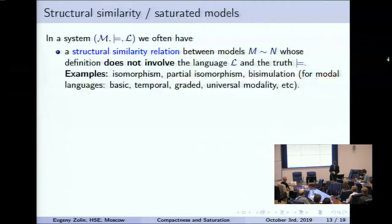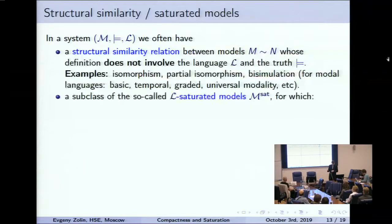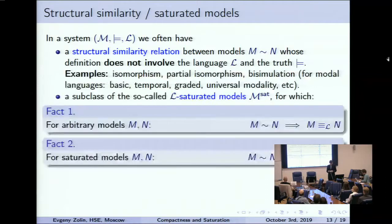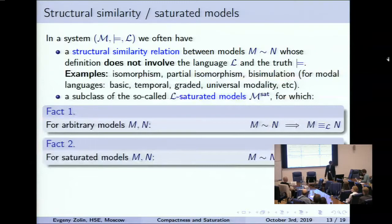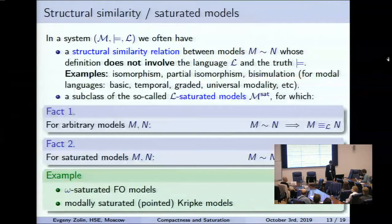There are many variations of bisimulation. The common property is that if two models are similar in this sense, they satisfy the same formulas. And there is a certain subclass of so-called saturated models with the following distinguished property: in general, if two models are similar, they satisfy the same formulas; but for saturated models, the converse is also true. For first-order structures, saturated models are what are called omega-saturated models. In modal logic and Kripke models, there is a notion of modally saturated models.